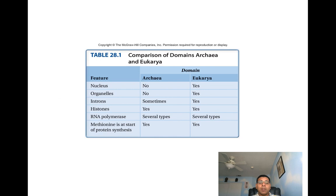Here we have a table that compares both archaea and eukarya to one another. The first difference is the nucleus and organelles. When we look at introns, histones, RNA polymerase, and methionine, these will be some similarities that they both share.